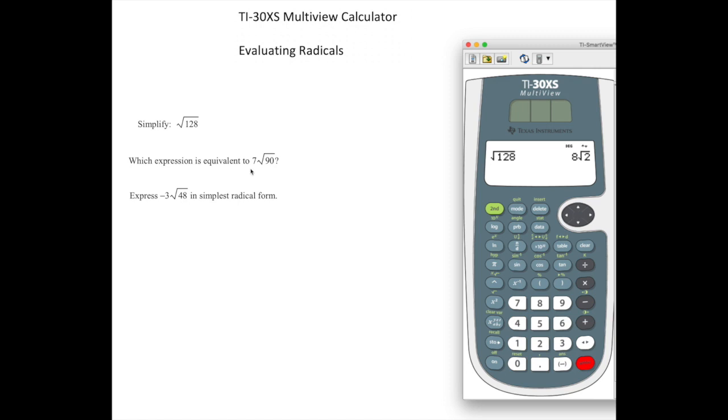So I'm going to press 7. 2nd function x squared, 2nd function x squared to access the square root function. And now I'm going to enter 90.